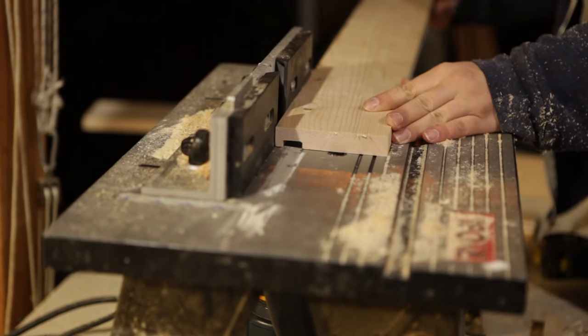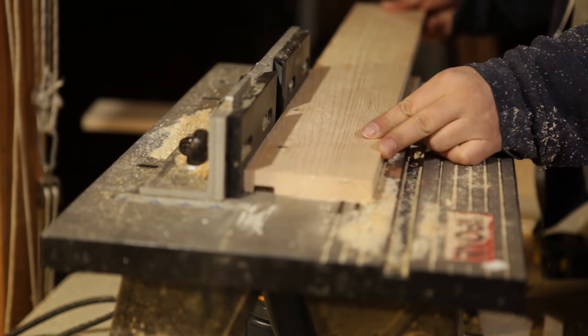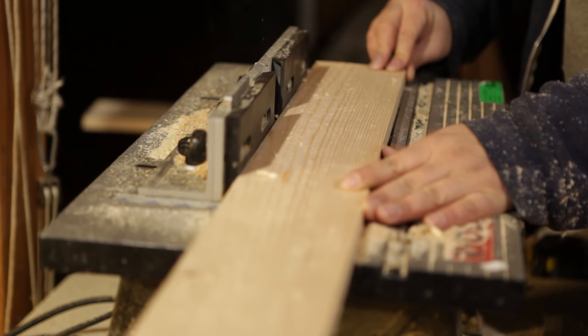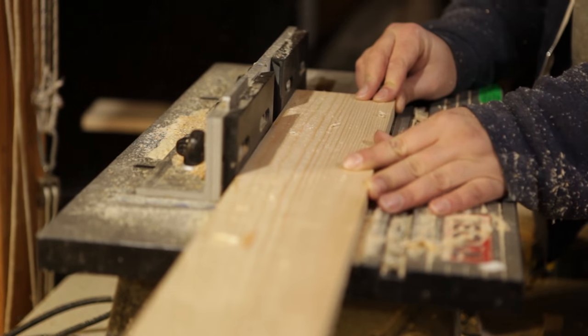My router is not strong enough to cut a three-quarter inch rabbet like this in one pass so I did it in a couple passes, one to get the right depth and then another one to get the right width at a full three-quarter inch.